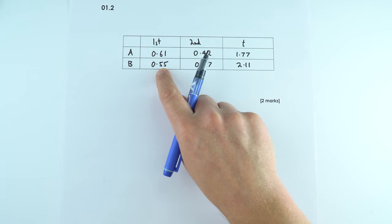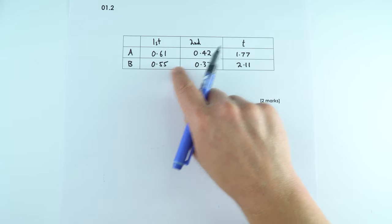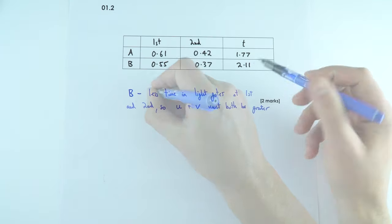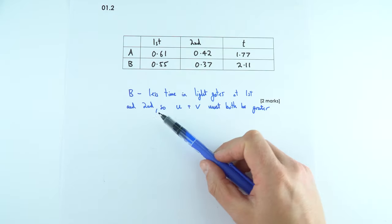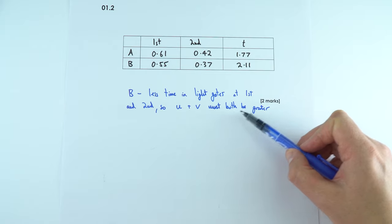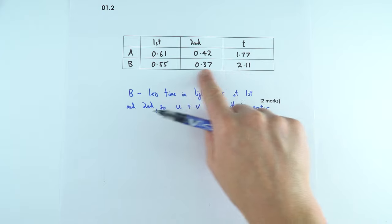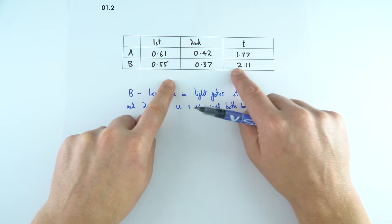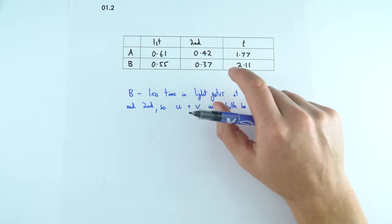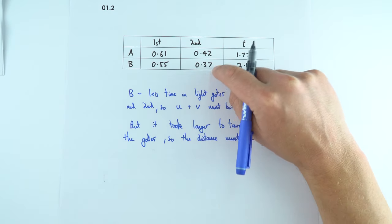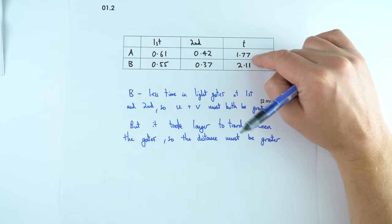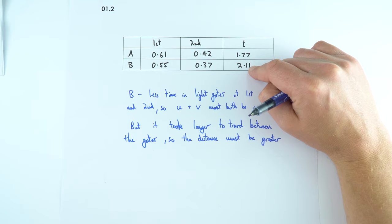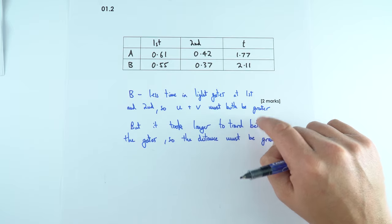Looking at the data, the time spent in the light gates for B — both first and second — was less, meaning it must have been travelling quicker. So for B, less time was spent in both light gates, meaning U and V were both greater. But even though it was travelling faster, it still took longer to get from the first to the second light gate, which means the light gates must have been further apart.